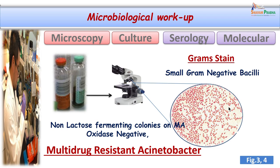Biochemical identification gave us the identity of the organism as Acinetobacter. Detailed antibiotic sensitivity was done, and we found this organism was resistant to multiple antibiotics tested; however, it was sensitive to colistin. Colistin acts against the cell walls of gram negative bacteria but does not act on gram positive bacteria.